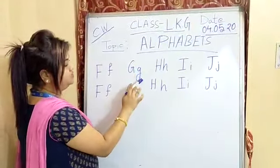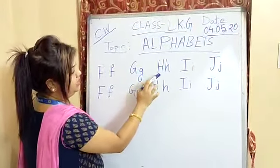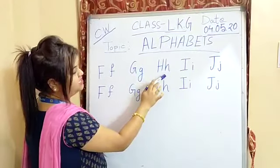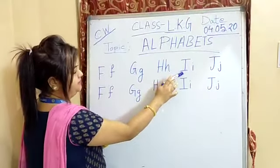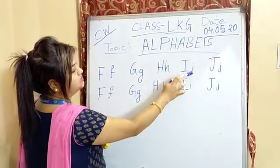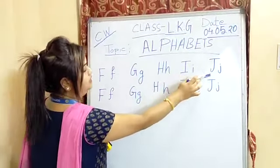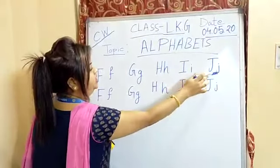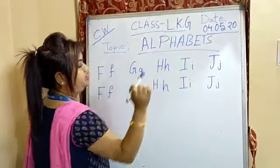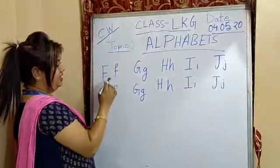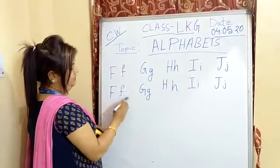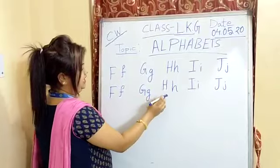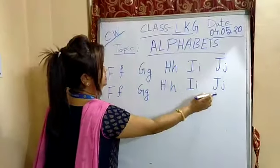Capital G, small g. Capital H, small h. Capital I, small i. Capital J, small j. The same thing I have written one more time: F, G, H, I, J.